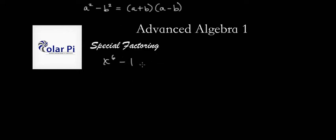If we use this approach, then we'd have to write that our polynomial is the same as x cubed and then squared to get the x to the 6th back, and then minus 1 squared.